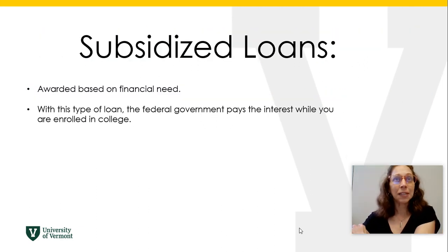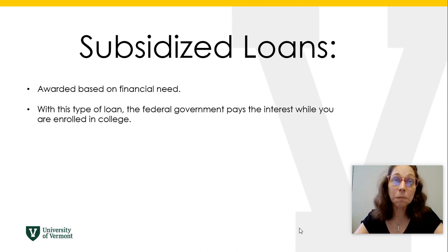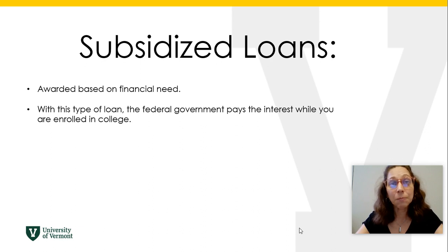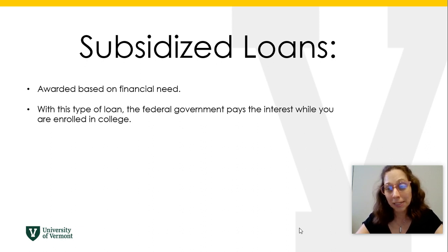With Subsidized Loans, you are awarded an amount based on your financial need. Subsidized means that the interest due on the loan is not the responsibility of the student while the student remains enrolled as at least a half-time student. The interest is subsidized, or paid by the Department of Education, during the enrolled period. So as a student, you do not have to pay interest while you are in school. The maximum federal loan amount for a first-year student is $5,500, and up to $3,500 of that can be subsidized if you qualify for need-based aid.